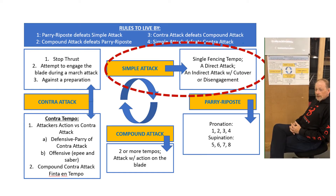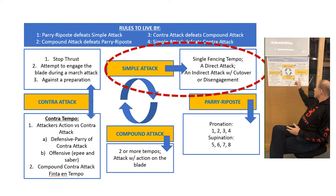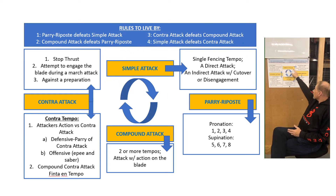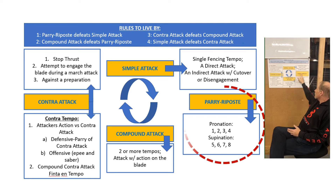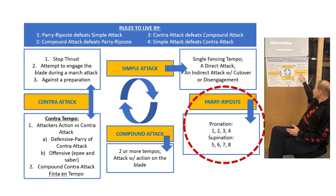How do you defend against a simple attack? You defend against it with a parry followed by a riposte. So a simple attack is the initiation of the wheel going into the next action that follows — an action that defends against it.